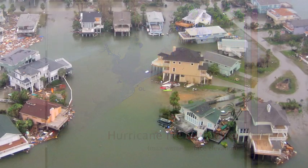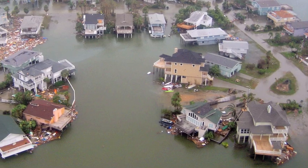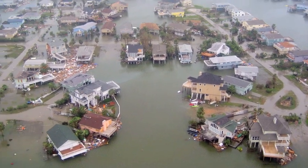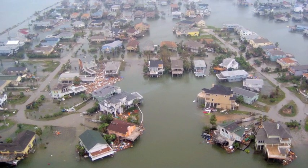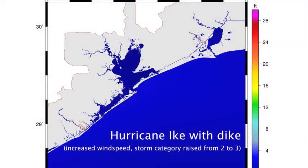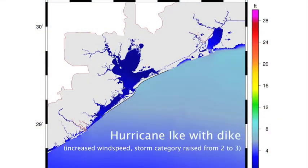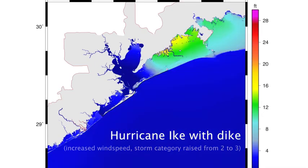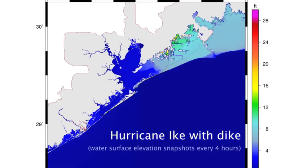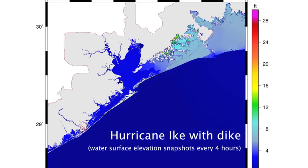We've also looked at what would have happened if Ike had been a stronger storm. By the time it hit land it had gone from a Category 4 back to a strong Category 2 — it was still a massive storm — but if the winds had been stronger and it had an even larger surge behind it, would such a dike have withstood that? And it's not clear. A 17-foot wall is not going to prevent 25 feet of water from overtopping and flowing into the bay.